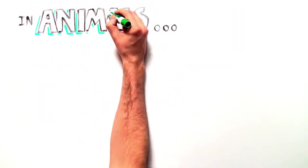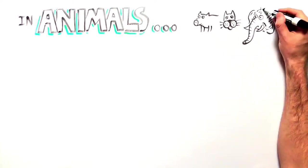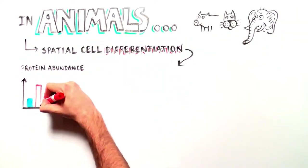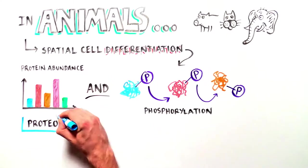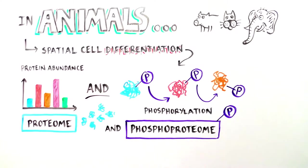In animals, this spatial distribution of cell types is defined by a specific profile of protein abundance and by their regulation through phosphorylation, which are known as proteome and phosphoproteome profiles, respectively.